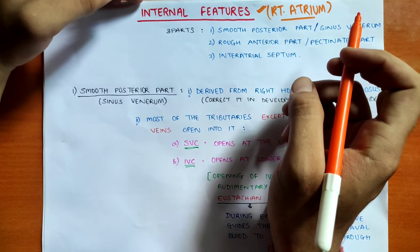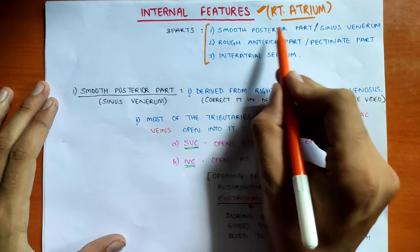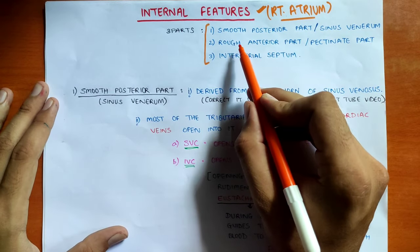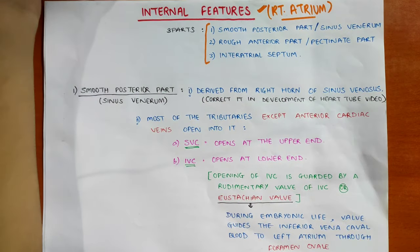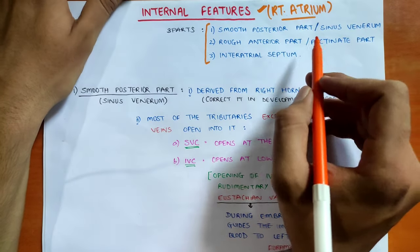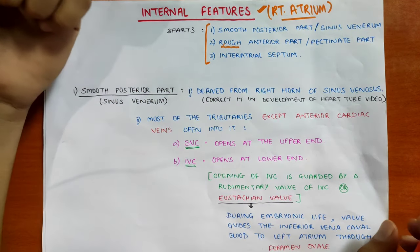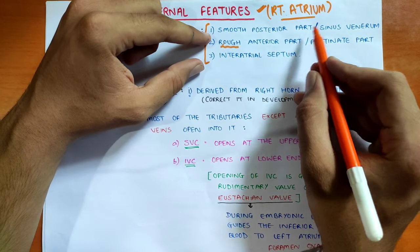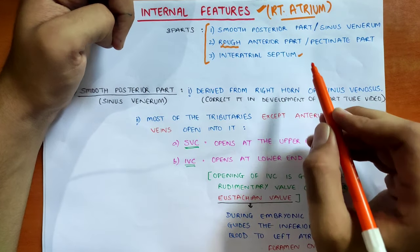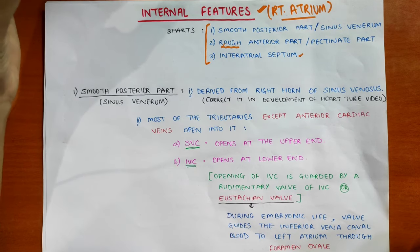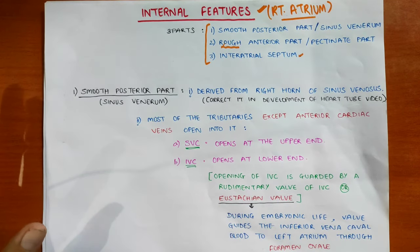We have divided the right atrium into three parts. One is the smooth posterior part which we call the sinus venarum. One is the rough anterior part which is the pectinate part. And the third is the interatrial septum, which is the septum between the right atrium and left atrium.